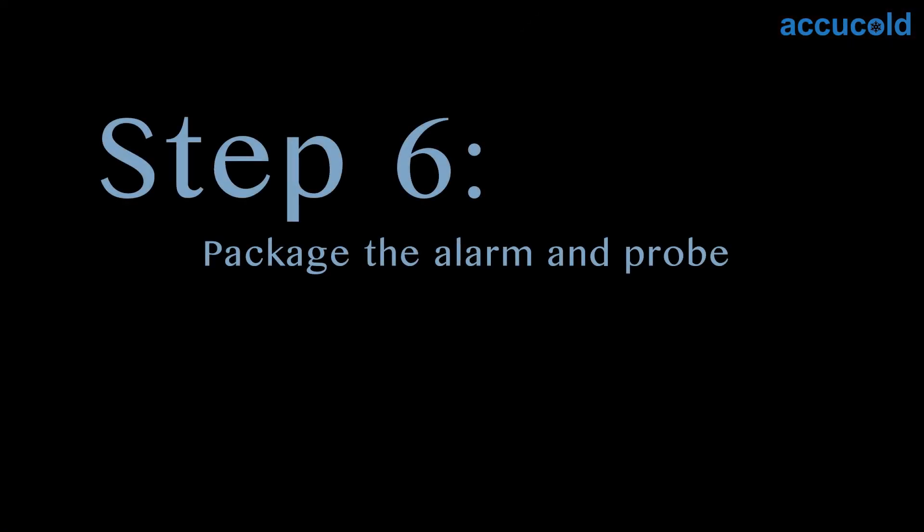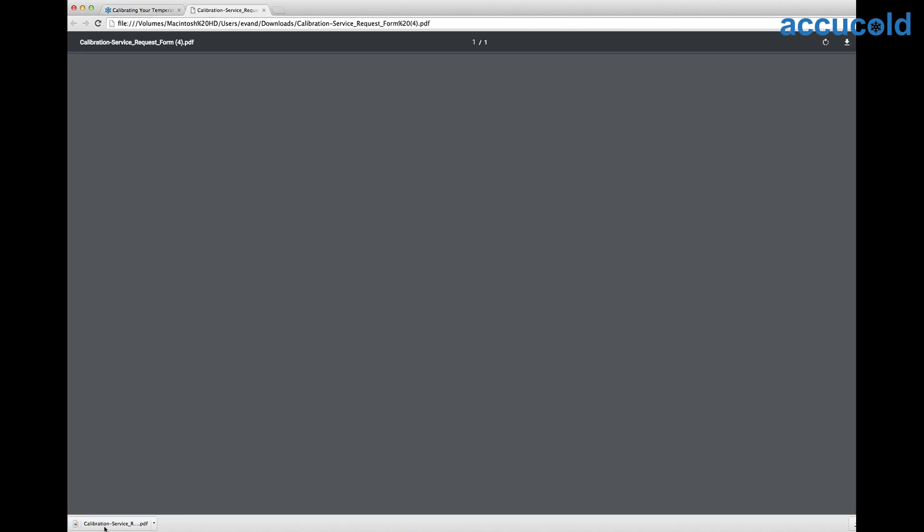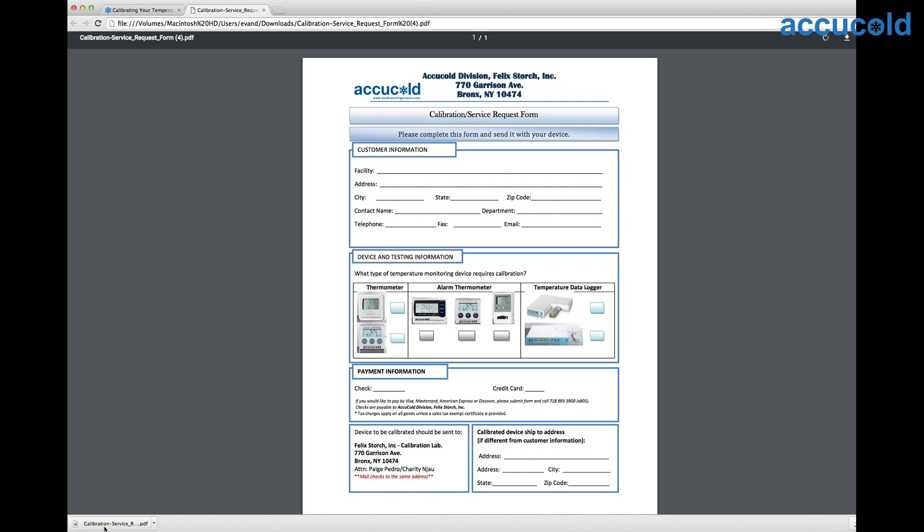Step six, package the alarm and probe. Visit accucold.com/calibration where you can find directions for payment and download the recalibration form. Fill out the form and follow the instructions on how to return it to the AccuCold lab. Package the thermometer and probe and ship it to the address provided on the form.